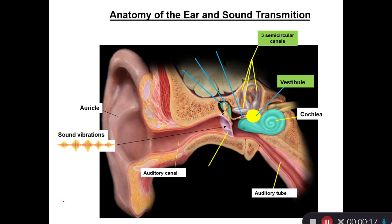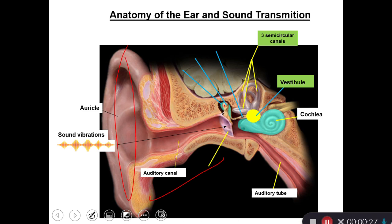The external ear has the auditory canal and auricle. The middle ear has three little bones that we call ossicles. In between the external and middle ear, we have the eardrum or the tympanic membrane. Then the inner ear has the cochlea, and this has the receptors for hearing.